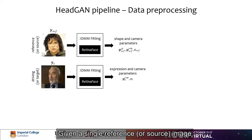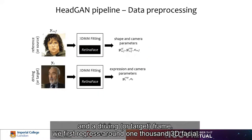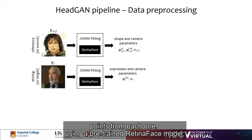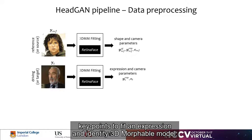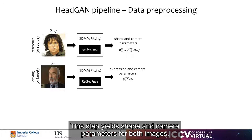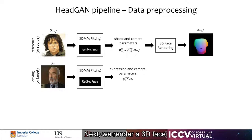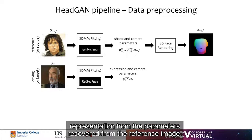Given a single reference or source image and a driving or target frame, we first regress around 1000 3D facial points from each one, using a pre-trained retina face model. After that, we make use of these dense key points to fit an expression and identity 3D morphing model. This step yields shape and camera parameters for both images.